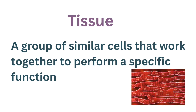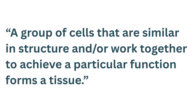So what is a tissue? A tissue is simply a group of cells that work together to perform a specific function — or a group of cells that are similar in structure and work together to achieve a particular function. In other words, instead of each cell working alone, many cells join hands to do the same job more efficiently, and this is what we call a tissue.